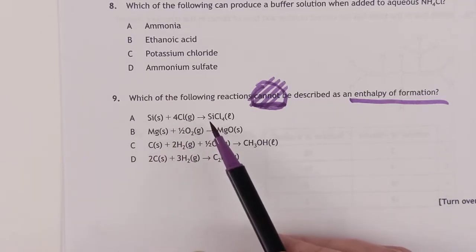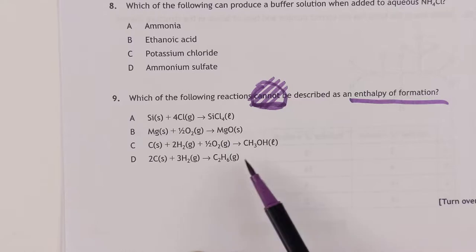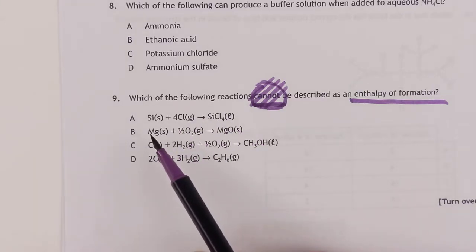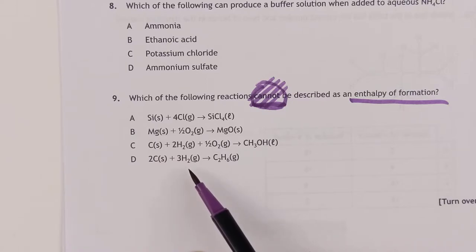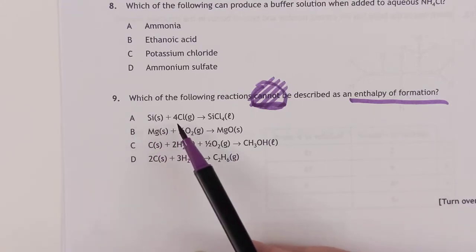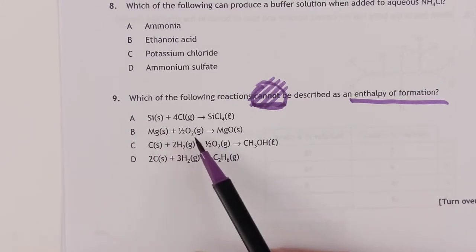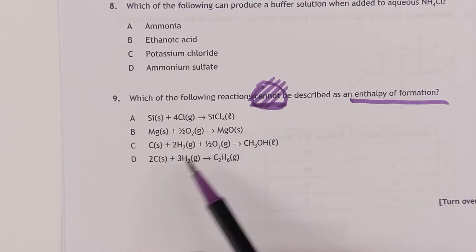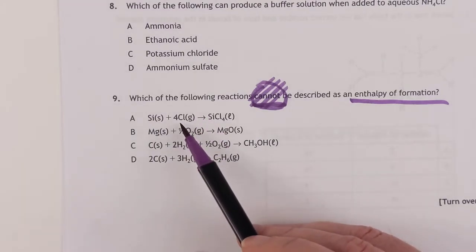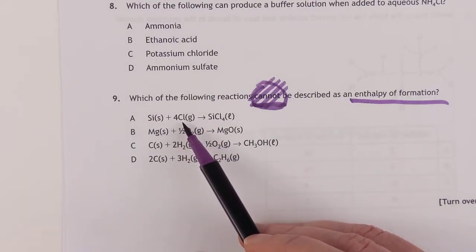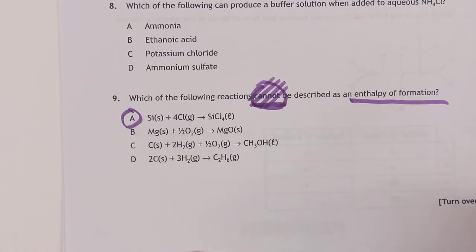For the definition, you're making one mole of the product — they're all one mole of the product. You have to make it from its elements — they're all elements. And the elements have to be in their normal states at room temperature. Silicon solid, chlorine gas, magnesium solid, oxygen gas — they're all looking good so far. Except, if you have a look at the chlorine — chlorine is not monatomic, chlorine is diatomic. So that is the incorrect one.